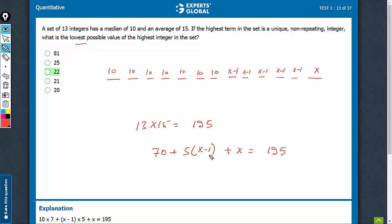70, and minus 5, so 65. 195 minus 65 is 130. And this is 5x plus x, 6x is equal to 130. x turns out to be 21.67.